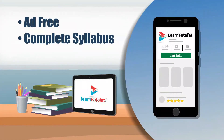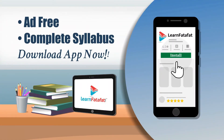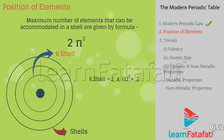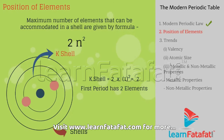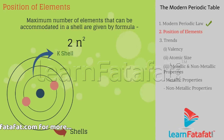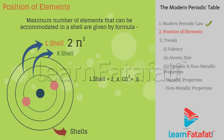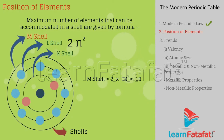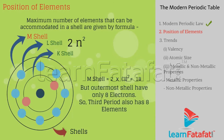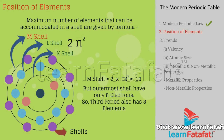Maximum number of elements that can be accommodated in a shell is given by the formula 2n². In the K shell: 2×1² = 2, hence the first period has 2 elements. In the L shell: 2×2² = 8, hence the second period has 8 elements. In the M shell: 2×3² = 18, but the outermost shell can have only 8 electrons, so the third period also has only 8 elements.